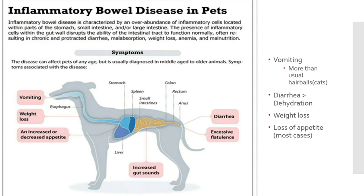Symptoms when your dog or cat has IBD include vomiting — or with a cat, more than usual hairballs — along with diarrhea, which leads to dehydration. Signs of dehydration include excessive skin tenting, where if you pick up the skin, it won't quickly return to its normal position. You could also see rapid weight loss. In most cases there will be a loss of appetite, though in some cases there may be an increase in appetite because the animal isn't getting the nutrients it needs and so eats more.